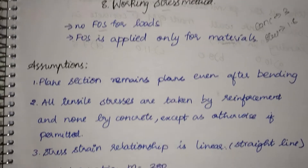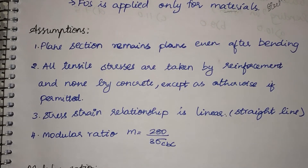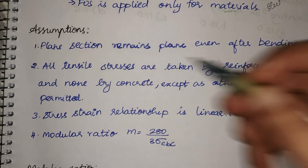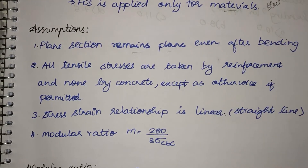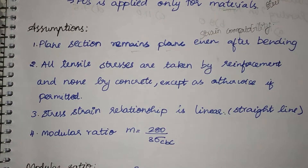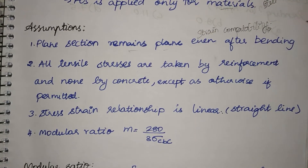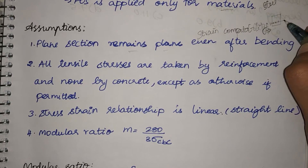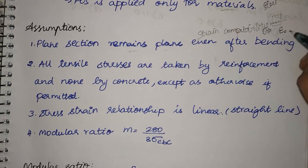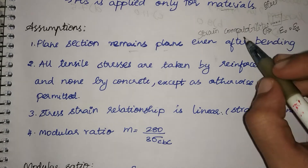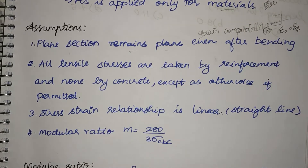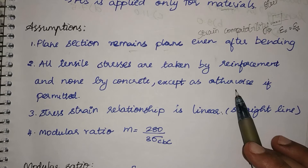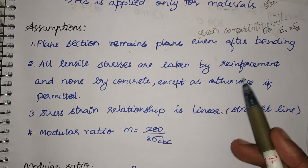Let us look into the assumptions made in Working Stress Method. The first assumption is that plane sections remain plane even after bending. This is the most famous assumption seen in almost every theory. This assumption is all about strain compatibility, which means that at the level of steel in a beam, the strain in concrete is equal to the strain in steel.